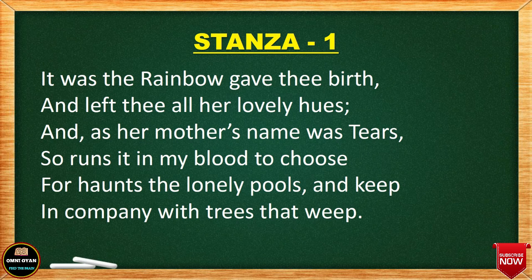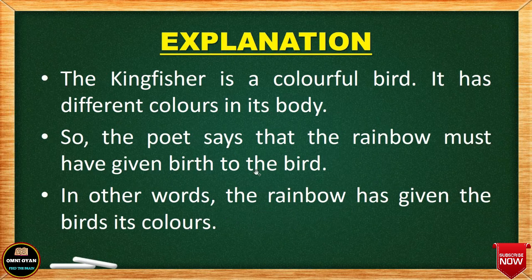The poem has three stanzas. Let's read Stanza One, composed by W.H. Davies: 'It was the rainbow gave her birth and left her all her lovely hues, and as her mother's name was Tears, so runs it in my blood, she haunts the lonely pools and keeps in company with trees that weep.'